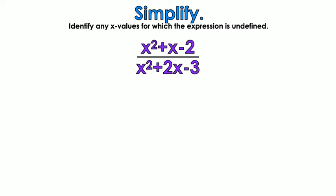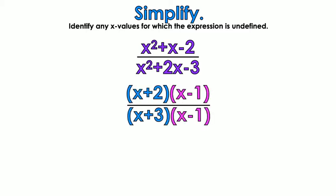Simplify — example number 2. Identify any x values for which the expression is undefined. You have to factor the top and factor the bottom. If you don't remember how to factor, go watch some videos. So I would get x plus 2 times x minus 1 for the top, and x plus 3 times x minus 1 for the bottom. What do we have that matches? The x minus 1. So I can simplify those out, and I have x plus 2 over x plus 3.